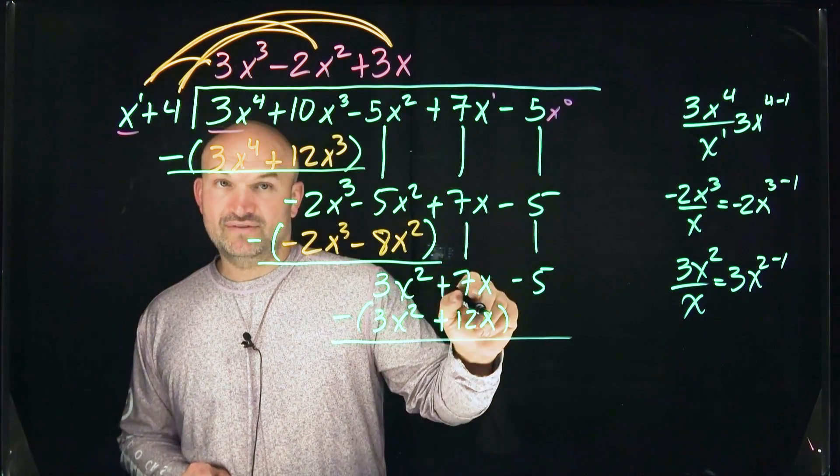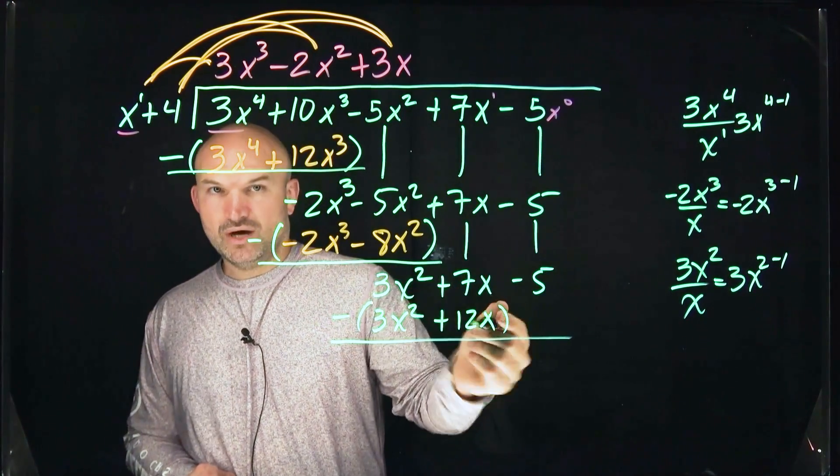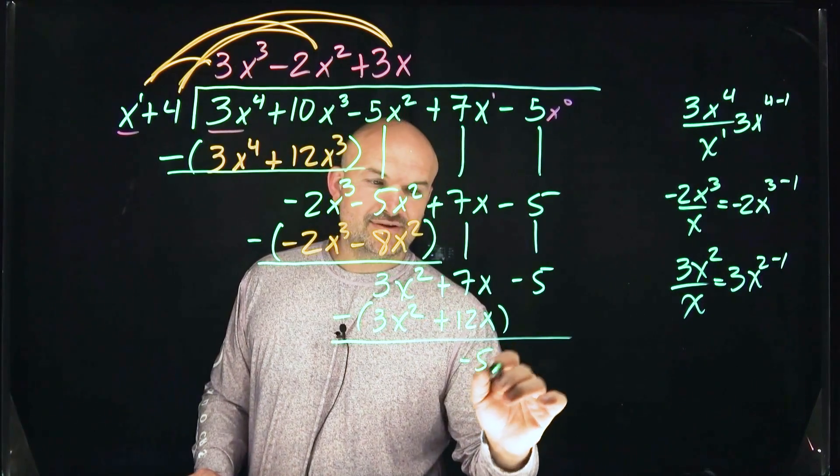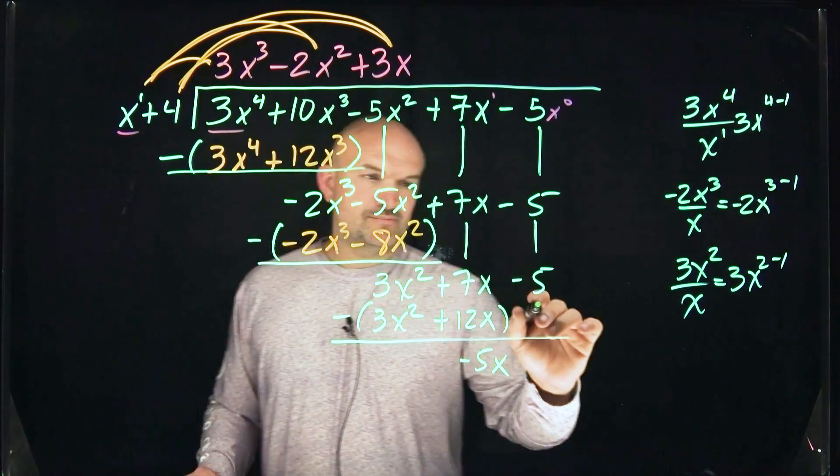7x minus 12x. So if you have $7 but you owe me 12, you now owe me $5. And then I can bring down the negative 5.